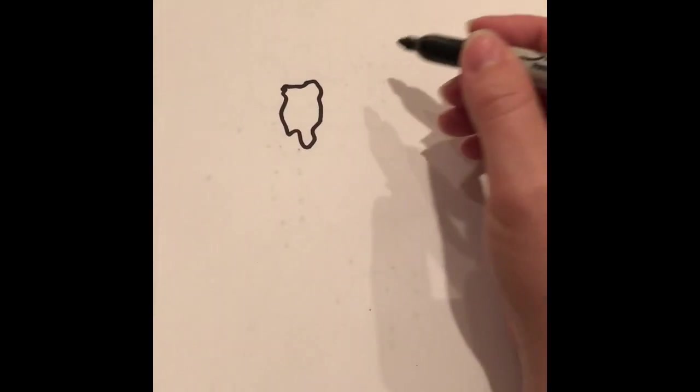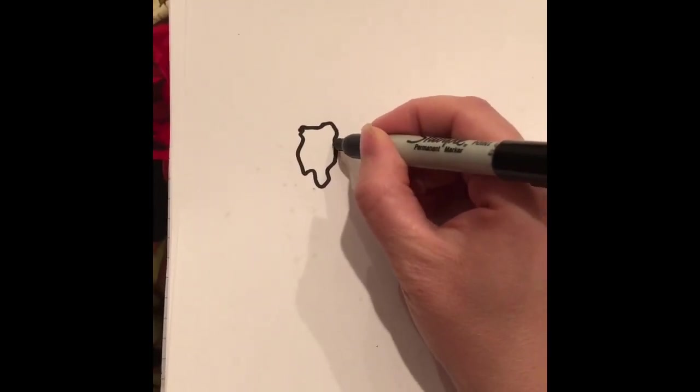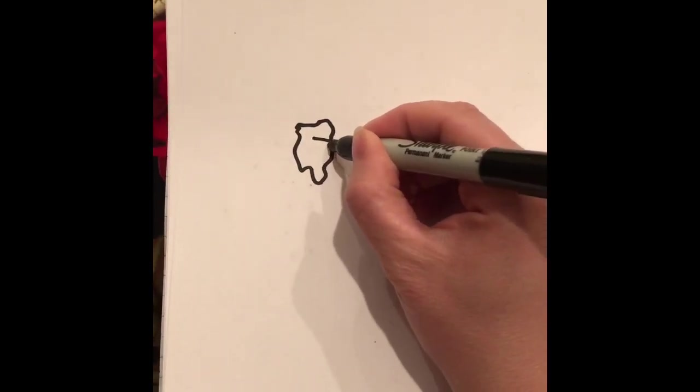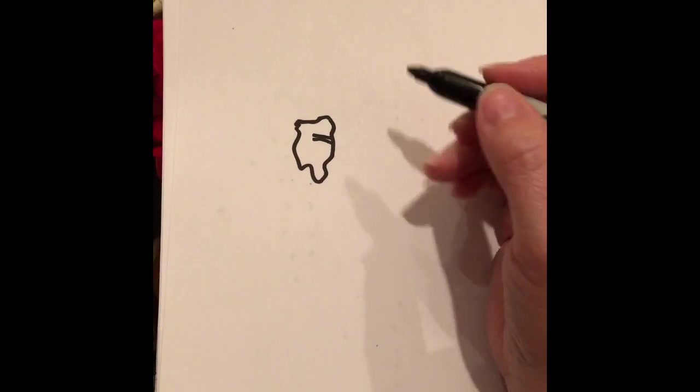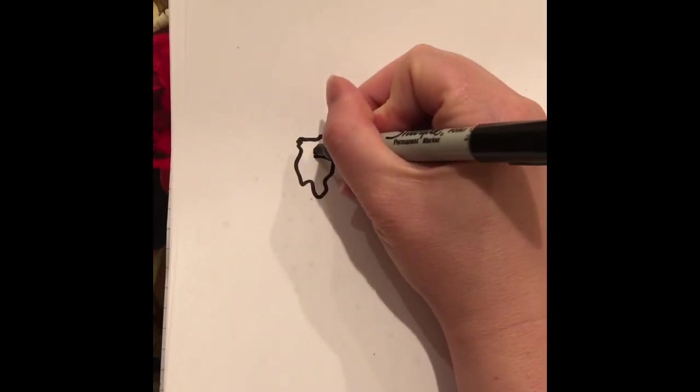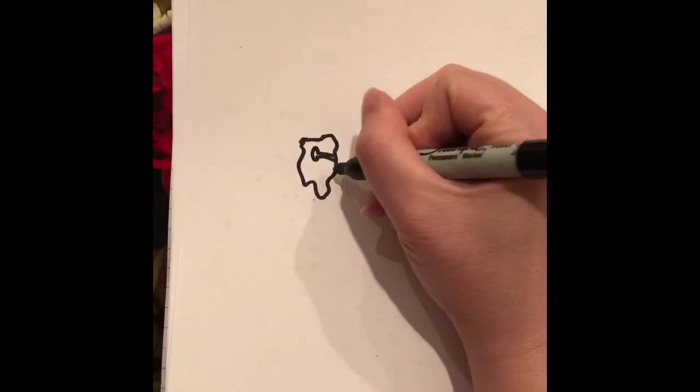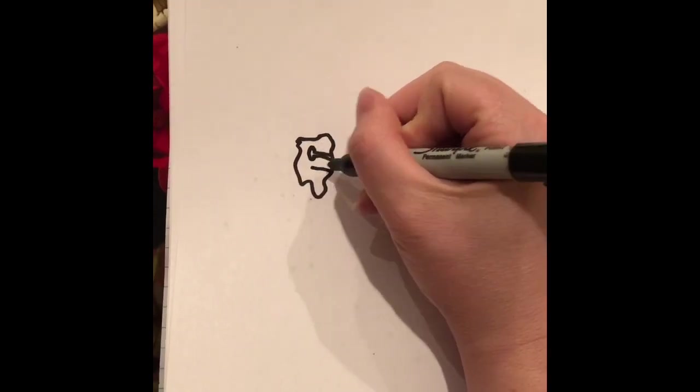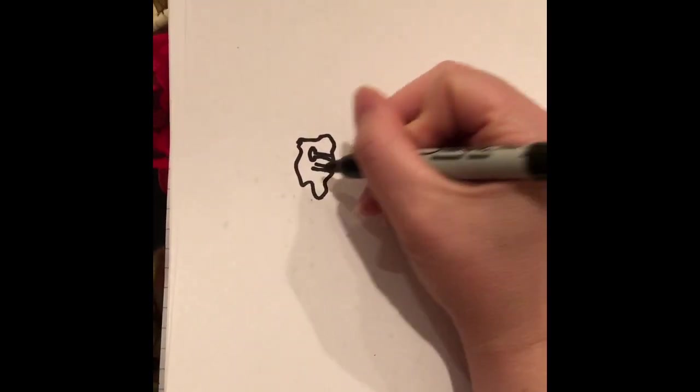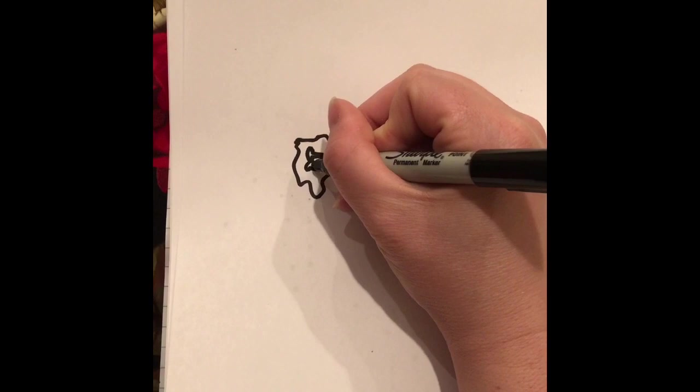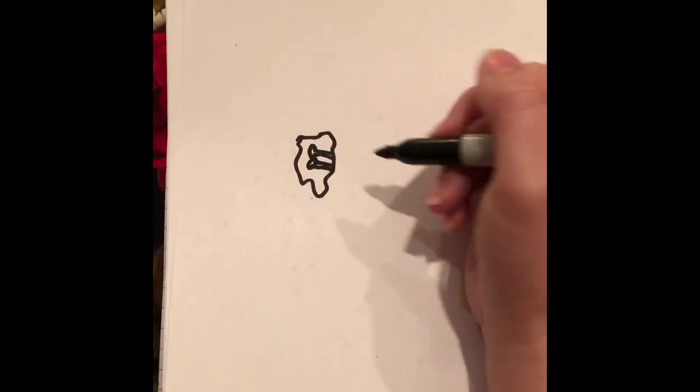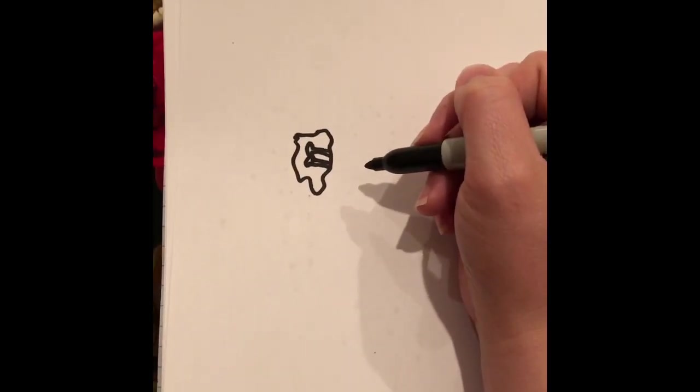Then I need to draw the stamens. So the stamens I'm going to make two straight lines that are parallel next to each other. And then I'm going to make an oval at the end of them. And then I'm going to make my other two straight lines and then make an oval at the end. So the stamen is where the pollen usually is that the bee comes to get.